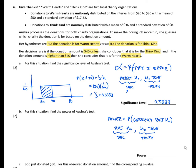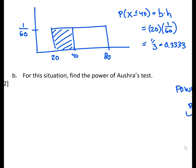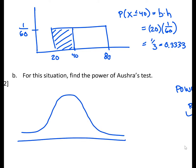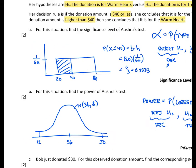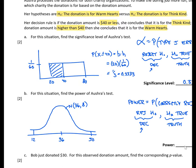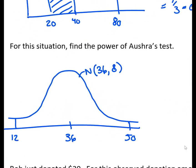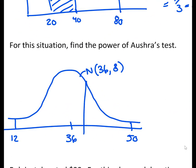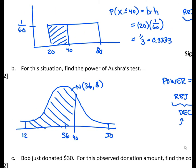The Think Kind distribution is normally distributed with a mean of $36 and a standard deviation of $8. Drawing that out as a bell curve, 36 is in the middle. Applying the empirical rule and going out 3 standard deviations to both tails gives values of about 12 and 60. We reject H0 for a donation of $40 or less, so we add $40 to the graph and shade the area to the left.